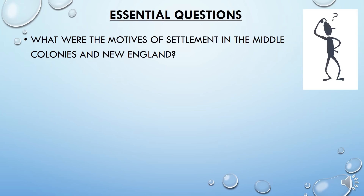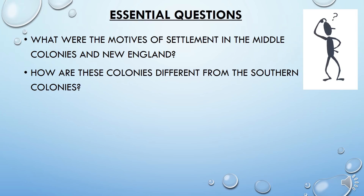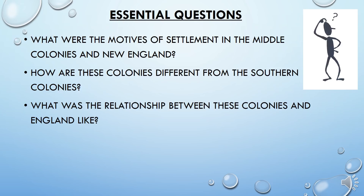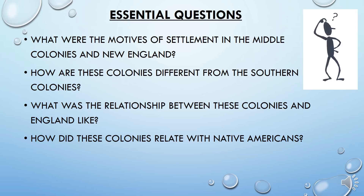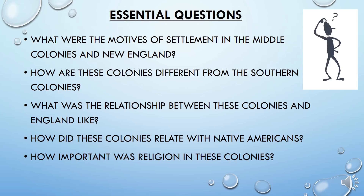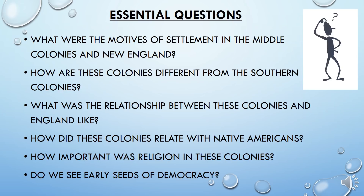What essential questions are we going to answer in Chapter 3? They'll be similar to the essential questions in Chapter 2, just a different region of the colonies. We need to understand the motives for settlement in the New England and Middle Colonies, how these colonies differ from the Southern Colonies, the relationship between the colonies and England, how the Middle and New England Colonies related with Native Americans, how important religion was, the similarities and differences between the three Colonial Zones, and where we see early seeds of democracy.